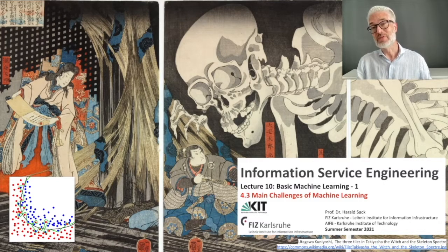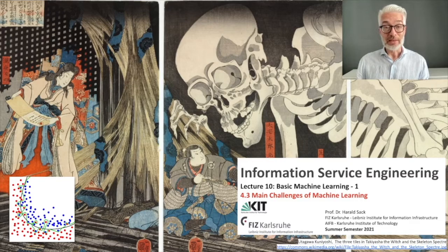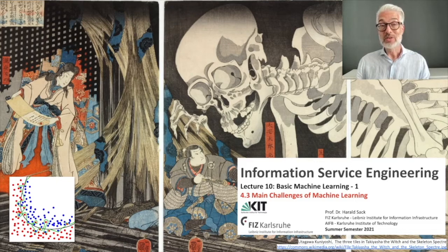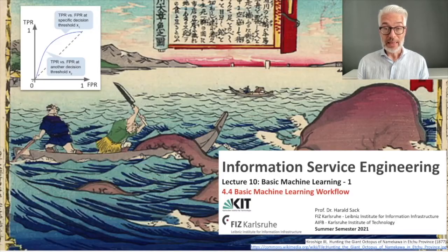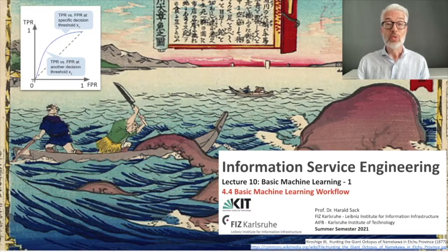Overfitting means the model works well on training data but fails when exposed to previously unseen data. Additionally, the data you collected to train your model might be biased — there might be a gender bias, a racial bias, or something similar. These are challenges we will talk about in this section of the lecture.